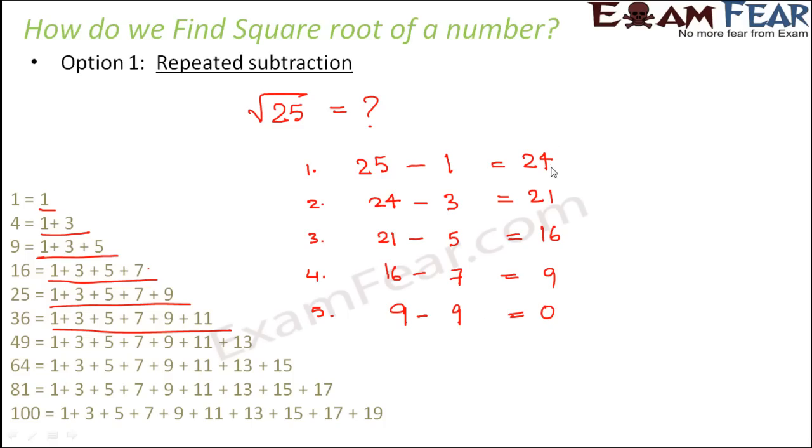Now what you have to do? Now you have to see in how many steps did you get this 0. In how many steps? 1, 2, 3, 4, 5. So you got this in 5 steps. So that means square root of 25 is 5. It is as simple as that.